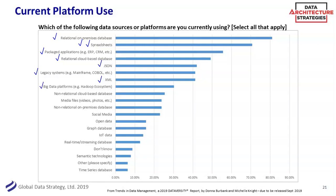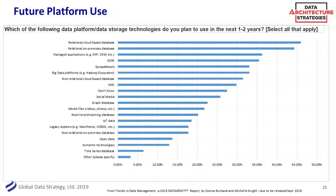I thought it was interesting to look at the future state and where things are headed. You'll still see relational as the main option in this particular survey — though this is Dataversity people, so that may be self-selective. But instead of being mostly on-prem, there is a massive switch: cloud is definitely ruling there. Things like package applications still exist. Spreadsheets still show up, at least people are being honest. And you'll now see that non-relational cloud-based or NoSQL databases are definitely moving up, showing the different options that people have.